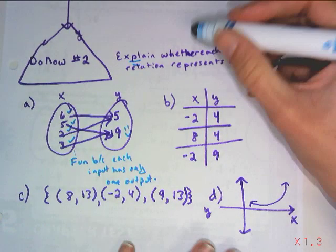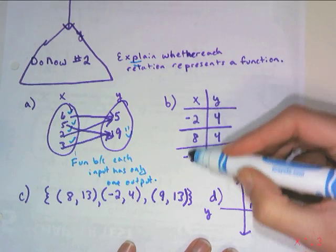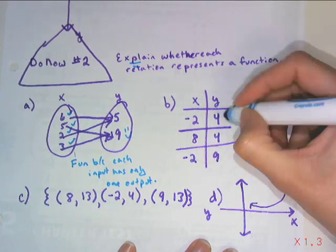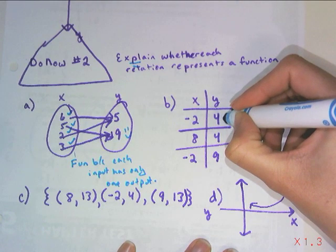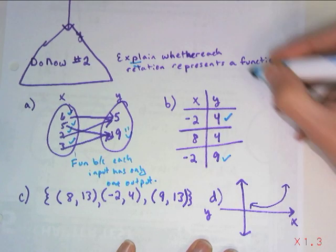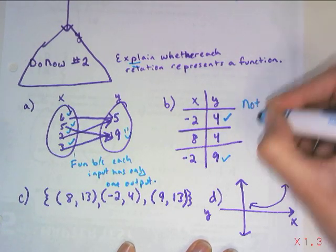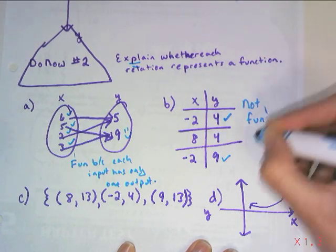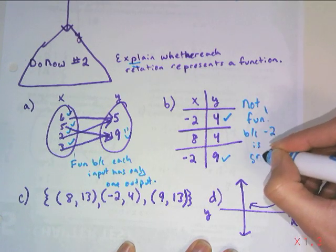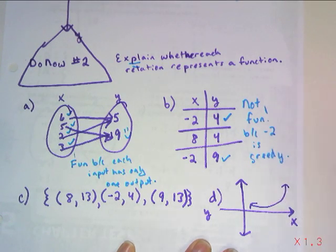This table, we look and we see that the input of negative 2 has been used twice, and here it happened to push out of 4, and here it happens to push out of 9. So this violates our definition. So this is not fun because negative 2 is greedy. He has 2 outputs when he's only supposed to have 1.